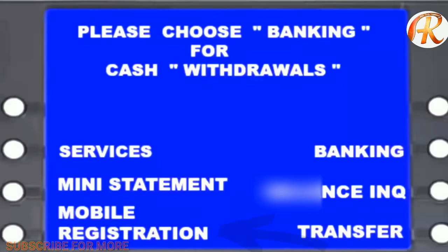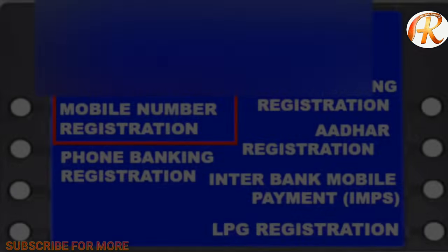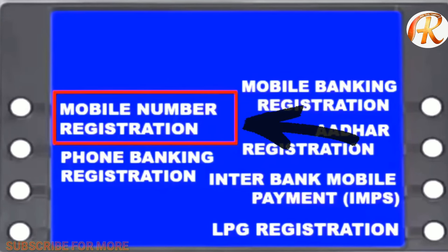First of all, you have to insert your ATM card. Then you have to click on the mobile registration option. You have to enter your PIN. On the left side, you can enter your mobile number.